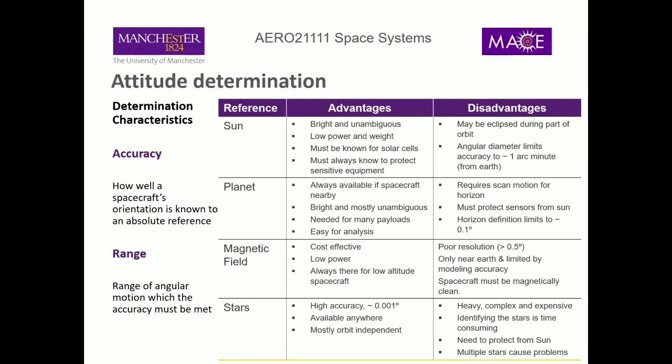For horizon sensors you need to be scanning, which means you need some sort of sensor that's moving in relation to the horizon to detect where that horizon is. That can be a challenge if your spacecraft isn't spinning — you might have to have some sort of spin component or spinning sensor on board. You must also protect the sensor from the sun, as these sensors are very sensitive and can be damaged by pointing directly at the sun. So you need some sort of hood or knowledge of the sun direction. Accuracy is about 0.1 degree.